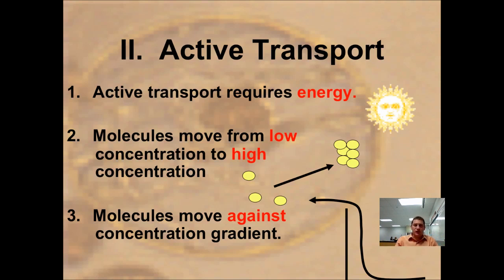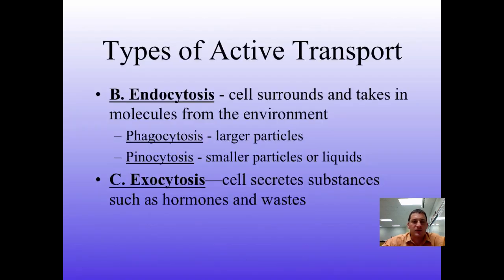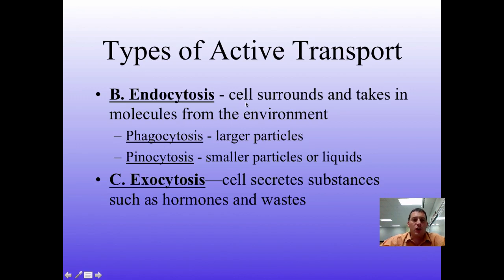The second type of transport is active transport. It's called active because it requires energy, and it moves molecules from a low concentration to a high concentration — against the concentration gradient. The two main types we need to know are endocytosis and exocytosis. Endo means into the cell — the cell surrounds and takes in molecules from the environment.